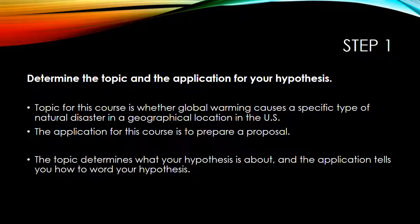Step one is to determine the topic and the application for your hypothesis. Our topic for this course is whether global warming causes a specific type of natural disaster in a specific geographical location in the US. I chose global warming because this is a research class and there is an abundance of scholarly resources. This is important in graduate research — to choose a topic with a large amount of research to draw upon. The topic determines what your hypothesis is all about and tells you how to word it. The application for this course is to prepare for a proposal, which is the week eight assignment.